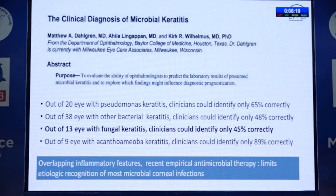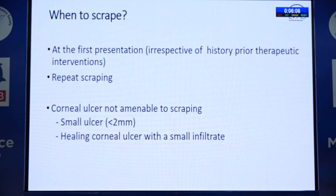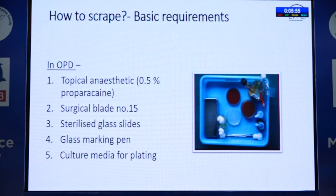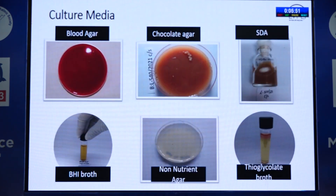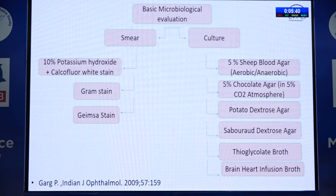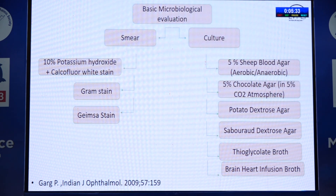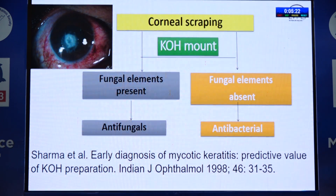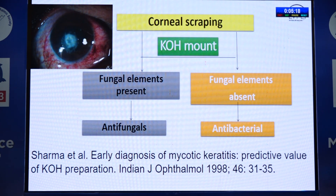If you can do at least a smear — 10% KOH, gram stain, or Giemsa — you will be able to pick up organisms. At rural secondary centers with a lab microscope, we do just 10% KOH to see presence or absence of fungal filaments, and based on that we start antifungal treatment. However, fungal filaments and acanthamoeba can be very difficult to see in KOH. KOH can be prepared by dissolving a tablet in 5 cc of distilled water.